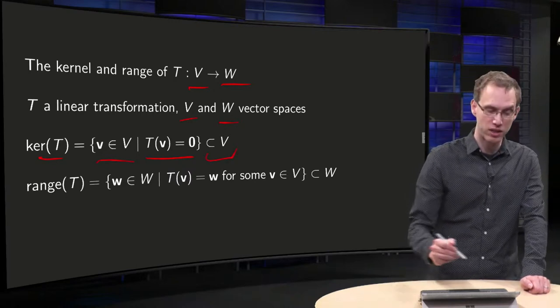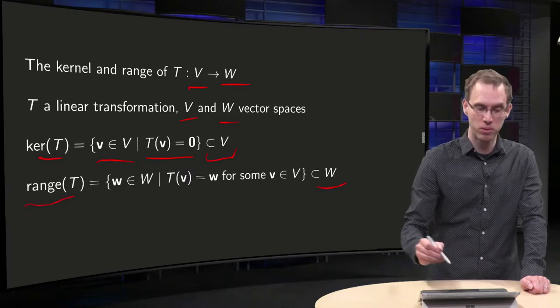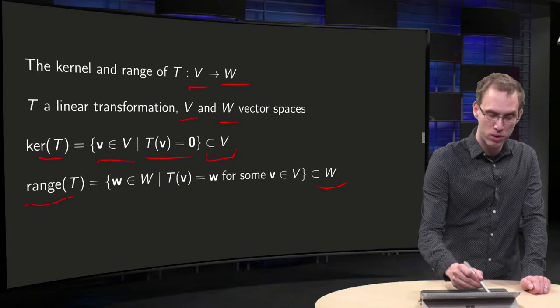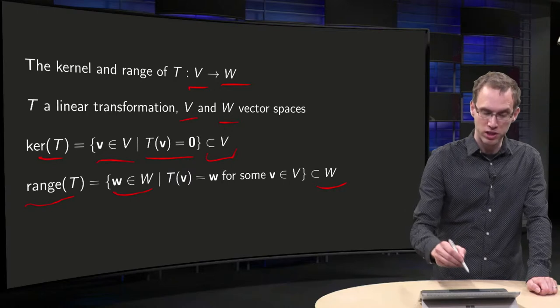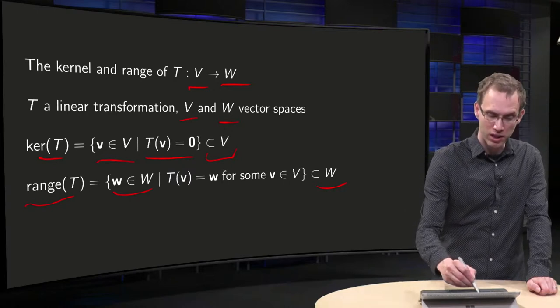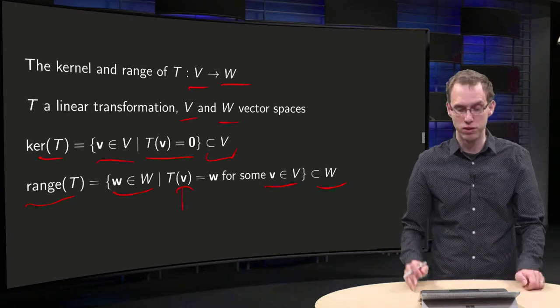And the range of T is a subset of the co-domain W, the set of all vectors w in the vector space W such that you can reach it, such that there is some V in the domain such that T(V) equals w.